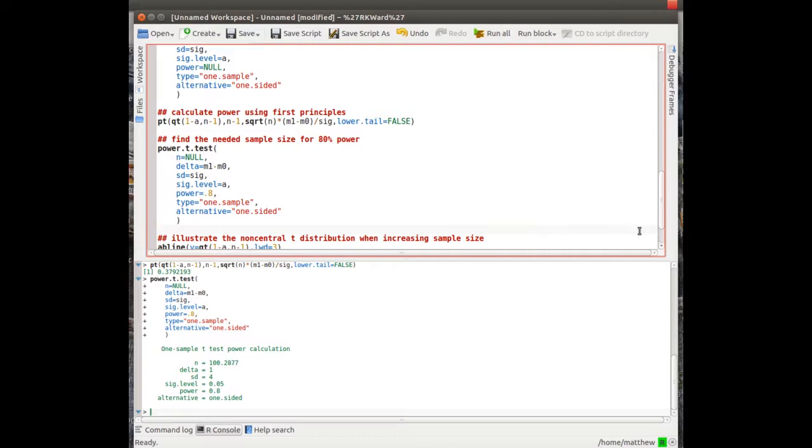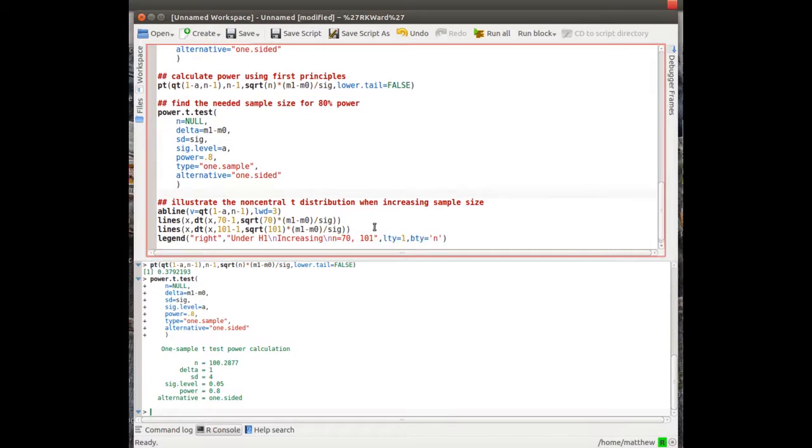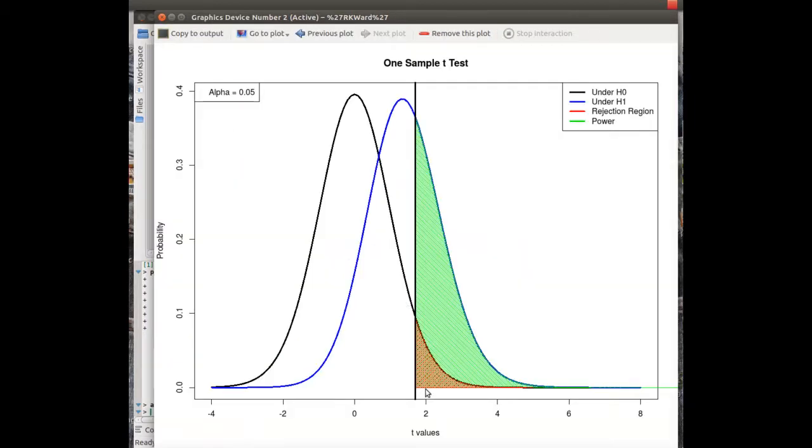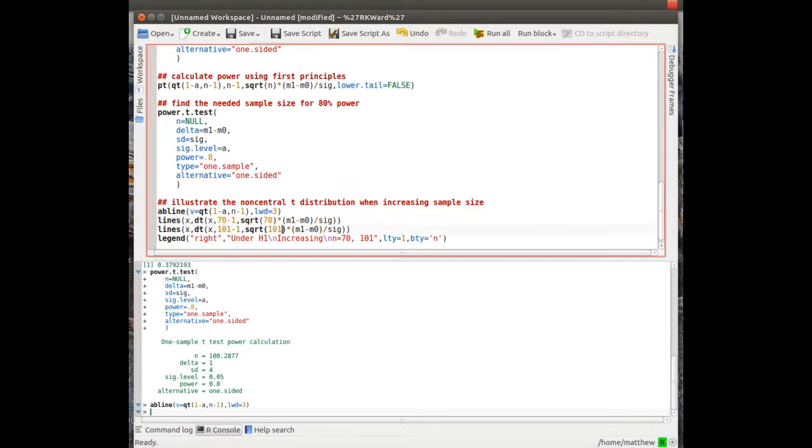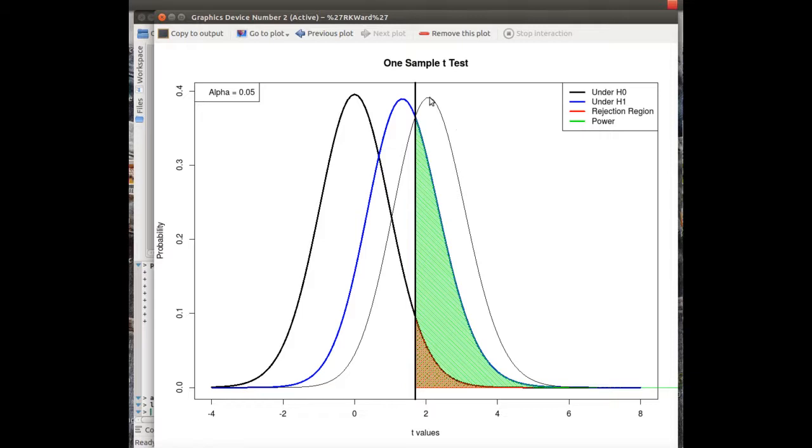Now I want to illustrate what's going on. I'll put a thick dark line because I'm going to recreate these distributions, increasing sample size incrementally, so we can see the shift as it goes to the right. First, I'll calculate the power when n is 70. It is shifted to the right, but the majority is not shifted enough to make the area 80%.